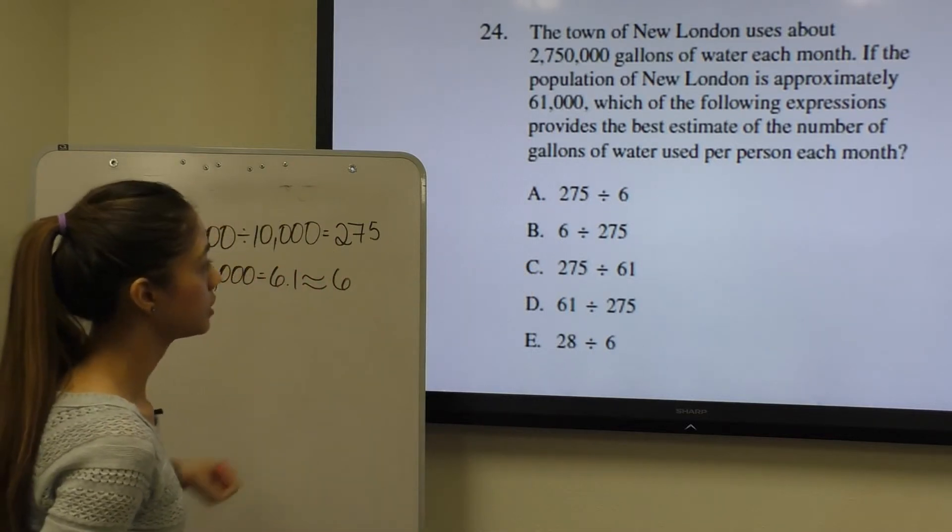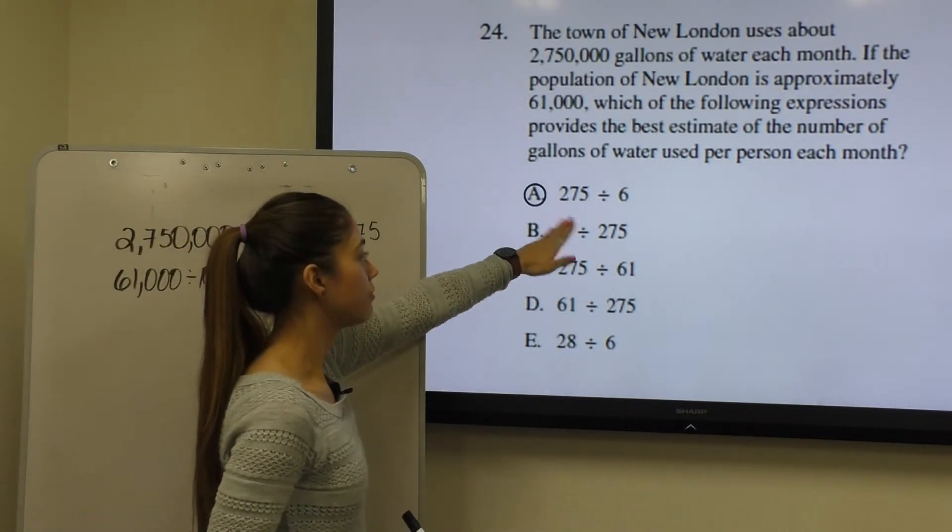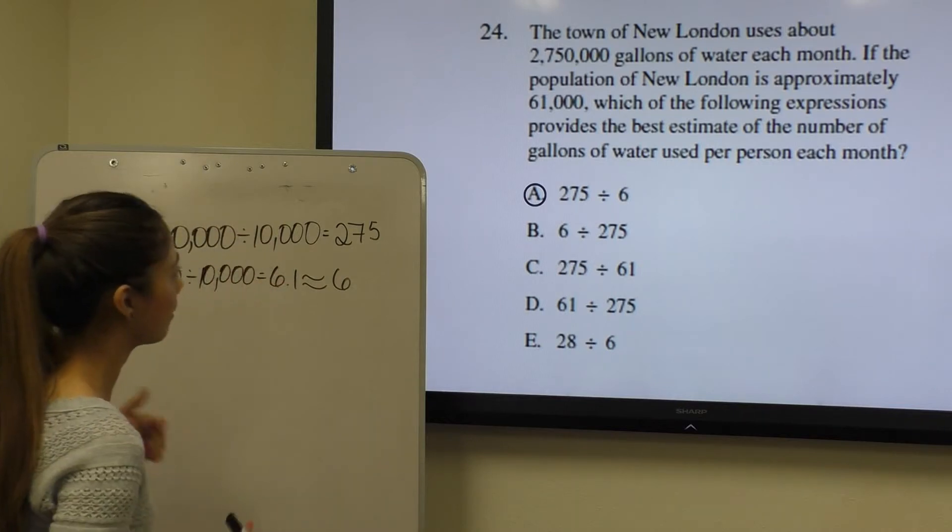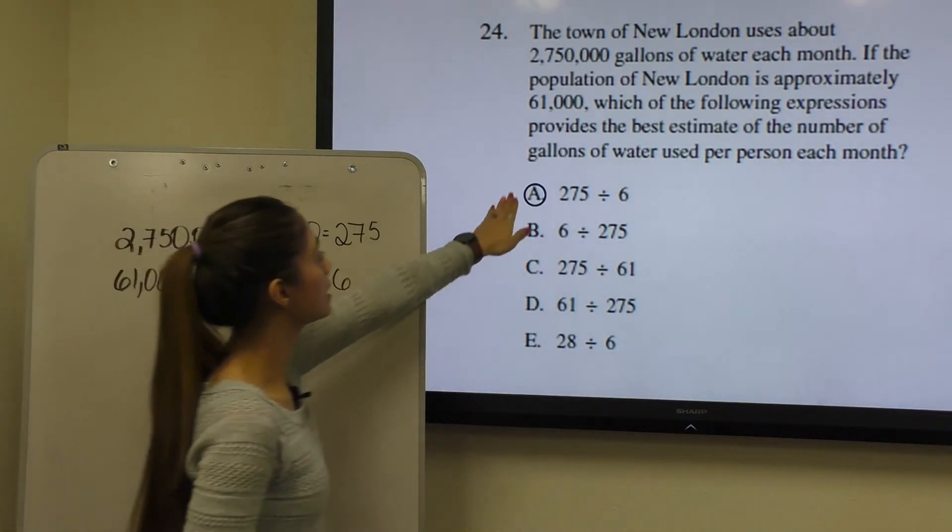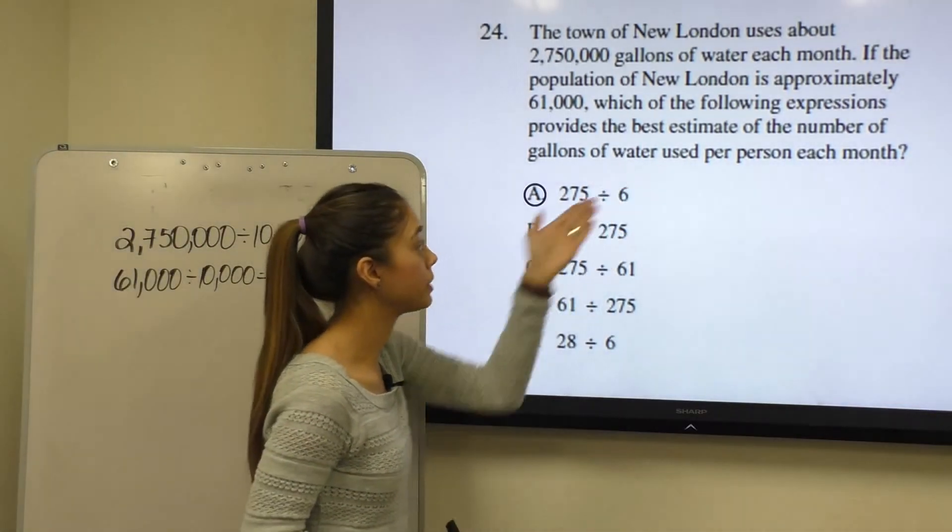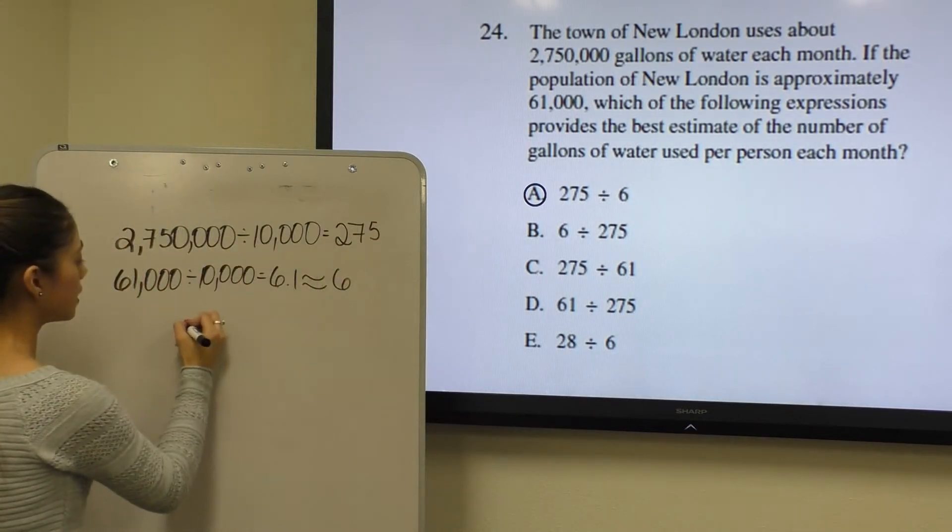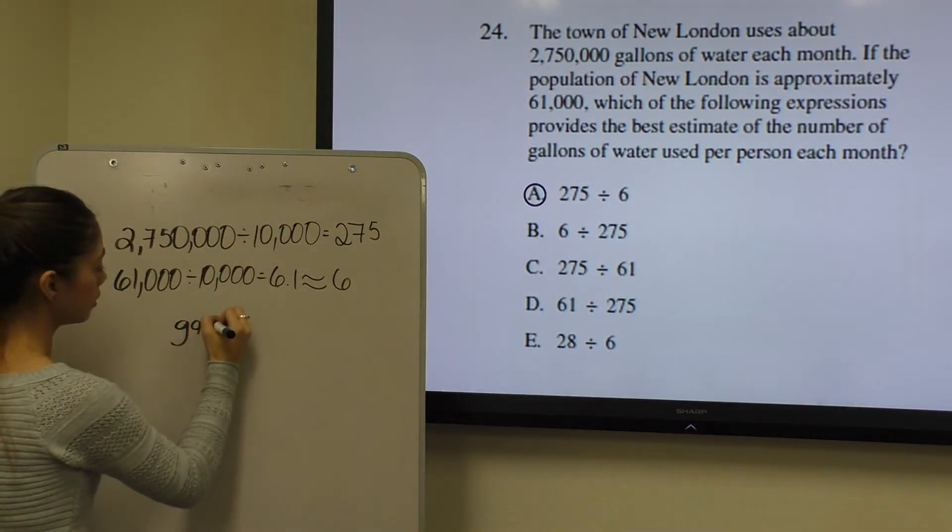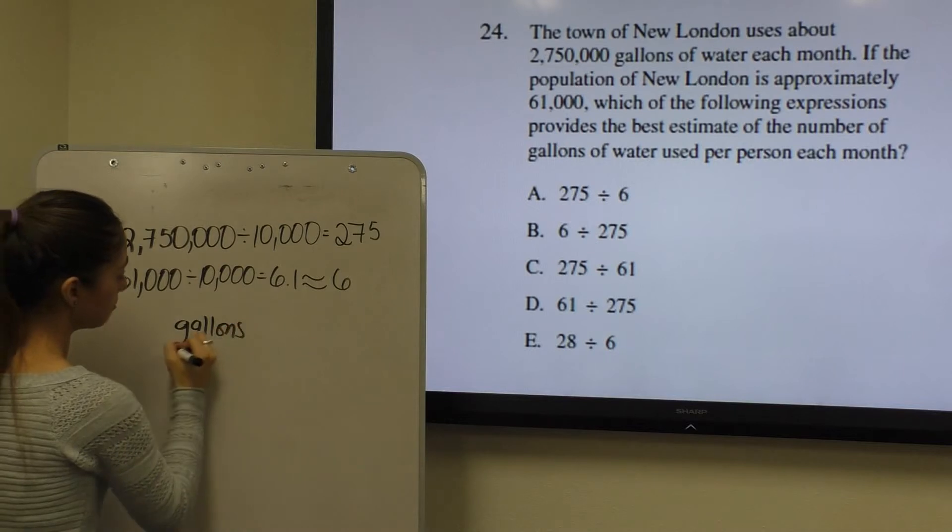So the question is whether we divide 275 by 6 or 6 divided by 275. Well, our word problem says gallons of water used per person, meaning it's gallons per person.